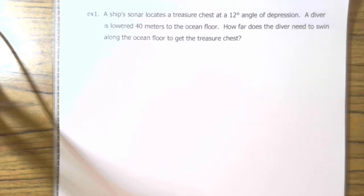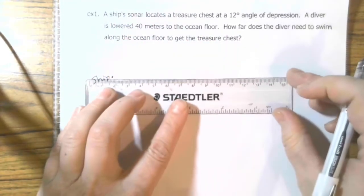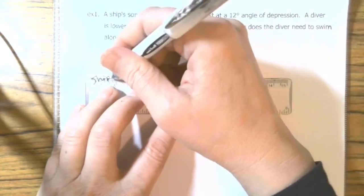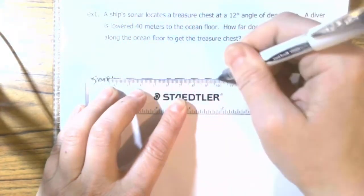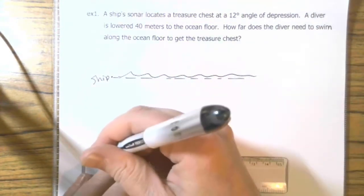A ship's sonar locates a treasure chest at a 12-degree angle of depression. A diver is lowered 40 meters to the ocean floor. How far does the diver need to swim along the ocean floor to get to the treasure chest? Okay, so we have a ship. And the ship is on the top of the water. Right, so we've got our ocean. And below the ship, you have the ocean floor.